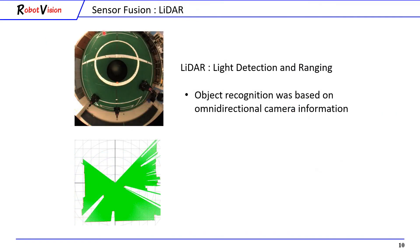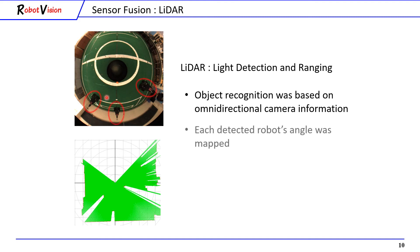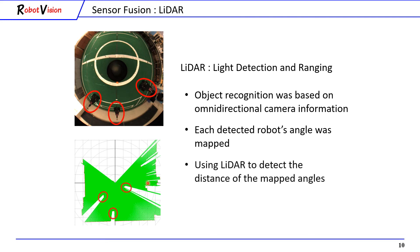Next is the second sensor, lidar. Because lidar is a 2D scanner, it needs to use omnidirectional camera information for object recognition. In this figure, there are three robots to be recognized. Each recognized robot's angle is then mapped, and lidar is used to measure the distance of the object.